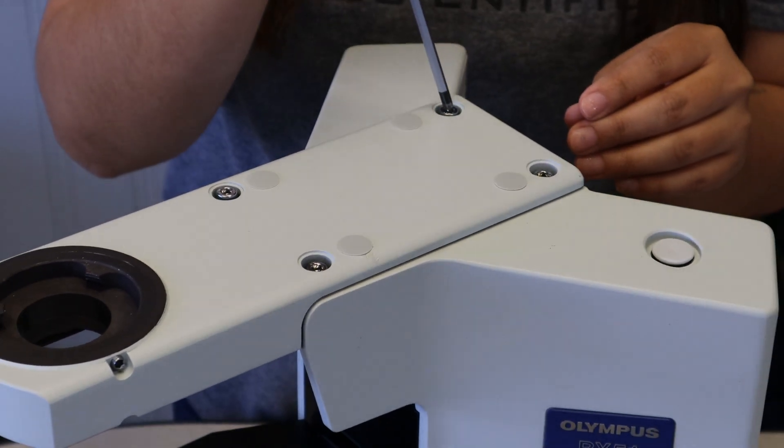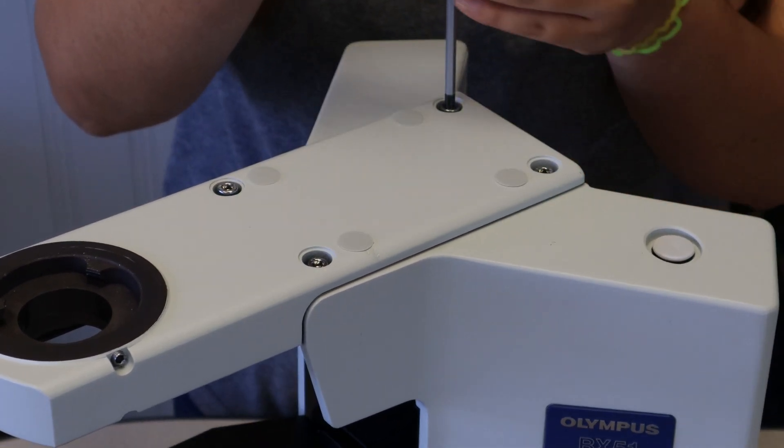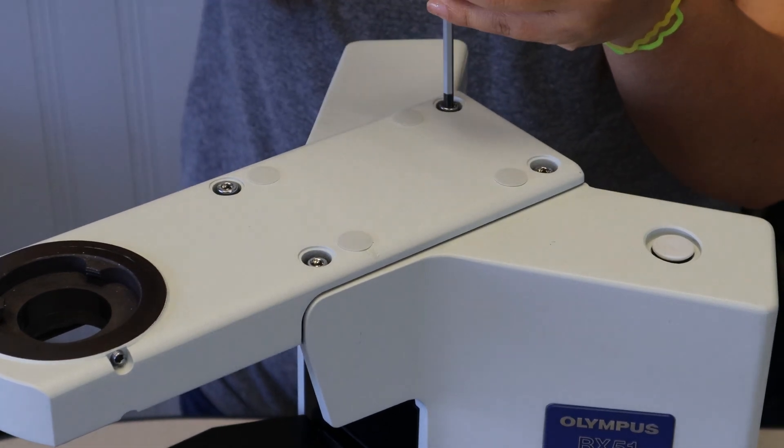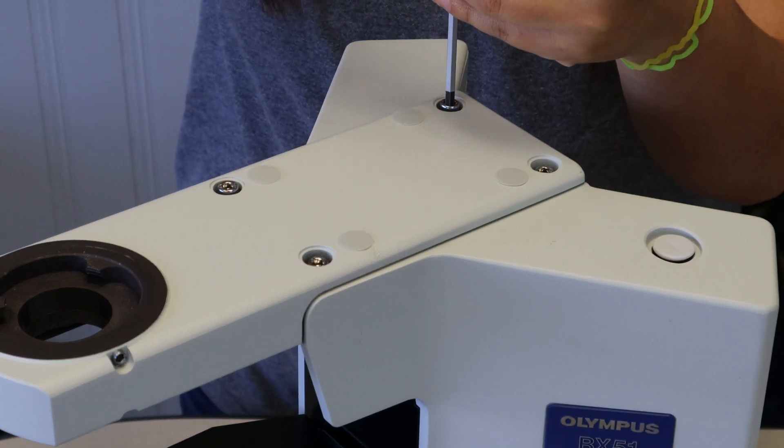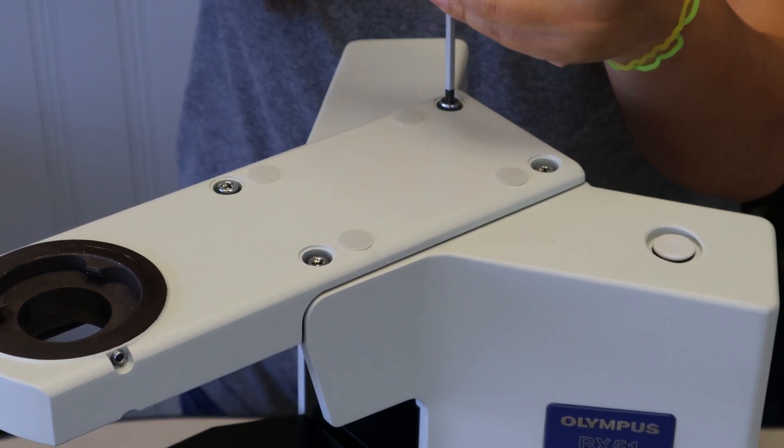Now you're going to grab your wrench, again this is the 4mm wrench, and you're going to start loosening up the bolts. We're going to have Maria do that real quick and we'll cut back when she's ready to take out the last one.